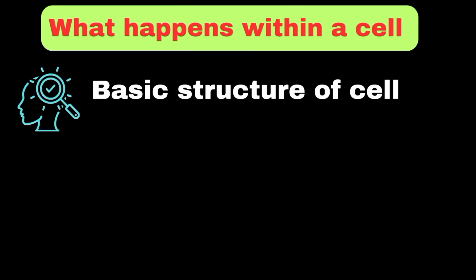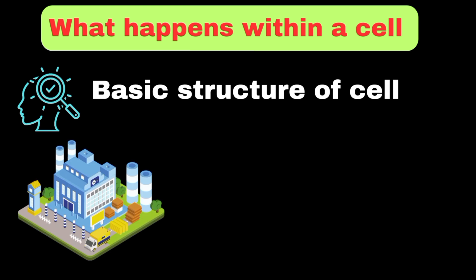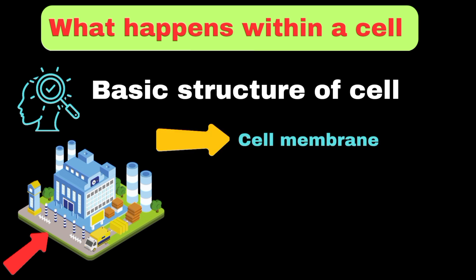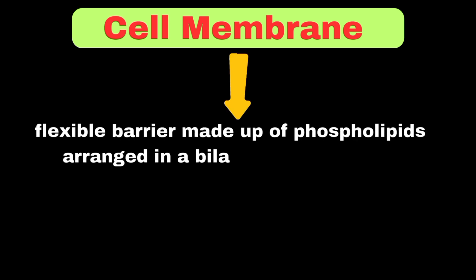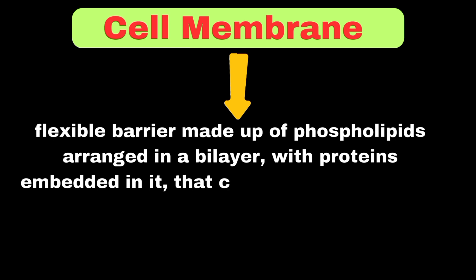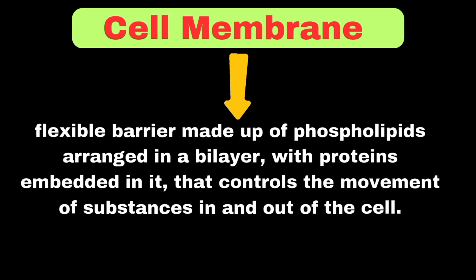Now we can learn what happens within a cell and its structure. Think of a cell as a busy factory with a special covering called the cell membrane that acts like the factory's walls. Just as a wall protects a factory but allows materials to enter and exit through gates, the cell membrane is made up of a special arrangement of lipid molecules that control what goes in and out. The cell membrane is a flexible barrier made up of phospholipids arranged in a bilayer, with proteins embedded in it, that controls the movement of substances in and out of the cell.